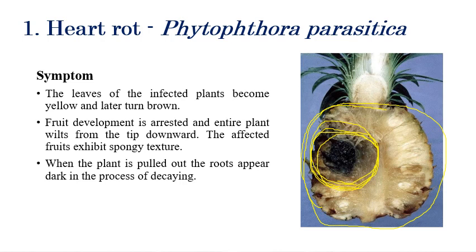After infection by heart rot, a spongy tissue-like appearance can be observed. The roots also can be dark or black in color. The leaves show yellowing, later turning brown. The major symptom is rotting of the internal tissue of the fruit, along with softening of internal tissues. After a few days of infection, a rotting smell can be clearly detected.